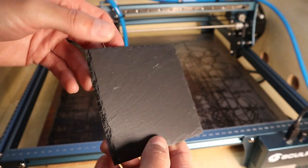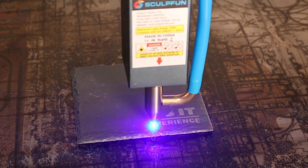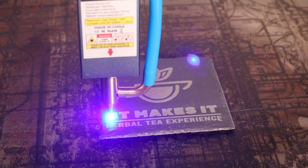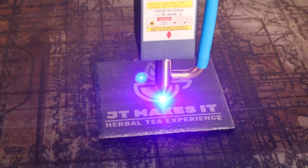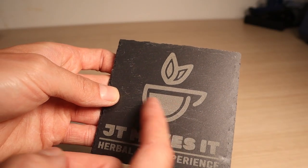And lastly, I engraved the slate stone coaster. I used relatively coarse crosshatching, but the engraving came out perfect. The engraving is very deep and will last for a very long time.